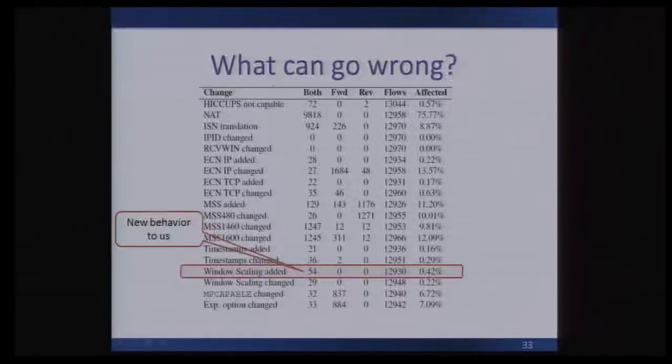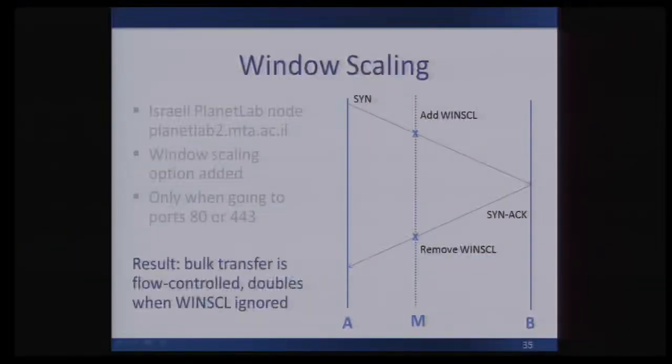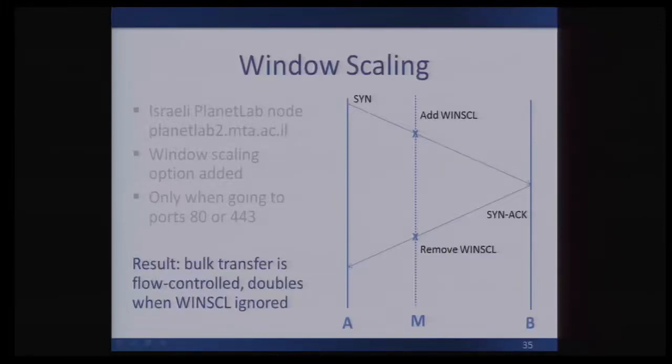We also saw a new behavior: window scaling being added. On one PlanetLab node, whenever we sent a packet without requesting window scaling, there was a box along the path that would effectively say 'oh, I'll help you out — you missed window scaling, I'll add that back for you.' And on the SYN-ACK, it also removed the responding window scaling from the other end. This only happened when going out to ports 80 or 443, and Hiccups helped us detect it. We ran a bulk transfer between our PlanetLab node and one of our server anchor nodes and observed that the transfer was obviously flow-controlled. When we told each end to ignore window scaling, the throughput doubled. We emailed the owners of the node, and it turns out they didn't know about the behavior — the issue was on one of their provider systems, and they contacted their provider to get it fixed.